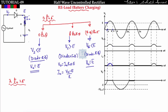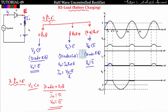From pi to 2pi: the supply is negative, so the anode potential is negative and the cathode potential equals E. The diode will be reverse biased and open circuited, so i_naught will be zero and V_naught equals E only. So from pi to 2pi we are also getting V_naught equal to E.